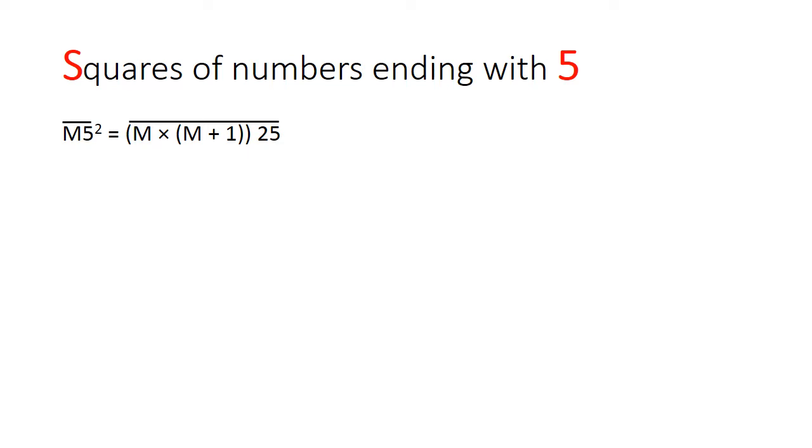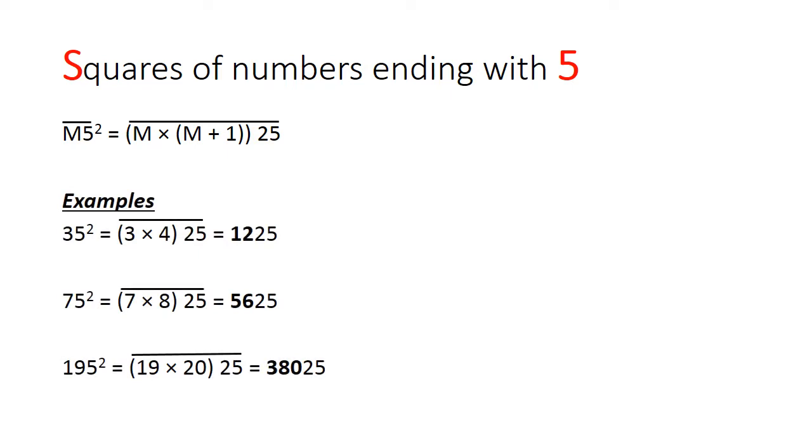Let's look at a few examples. Say 35 squared. We take 3 and multiply it with 4 to get 12, and we tag a 25 behind it to get 1225. For 75 squared, we take 7 and multiply that with 8 to get 56, and tag the 25 behind that to get 5625.